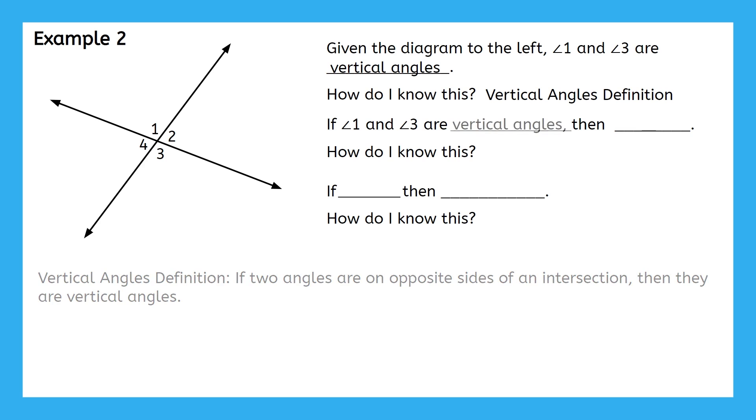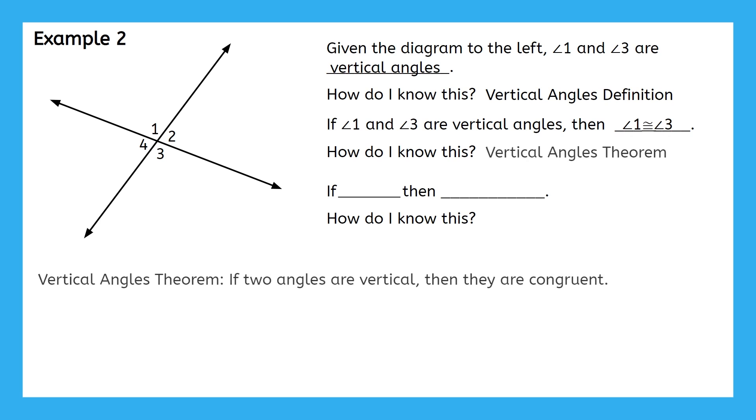We can use the vertical angles definition because this helps us identify vertical angles from a picture. Now that we know that angles 1 and 3 are vertical angles, what else do we know about them? Vertical angles are always congruent. Which one of those properties from the review activity tells me that? The vertical angles theorem.